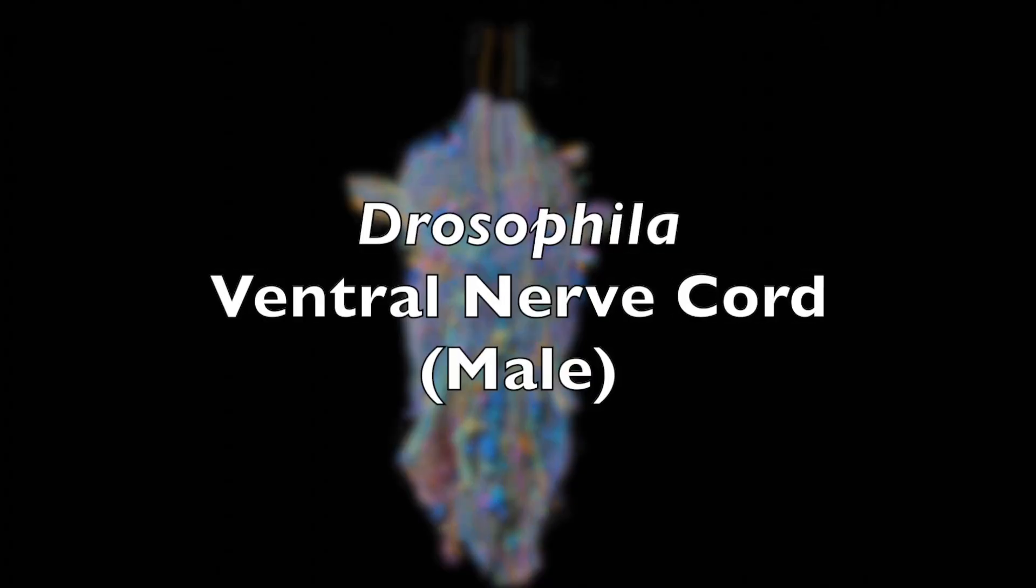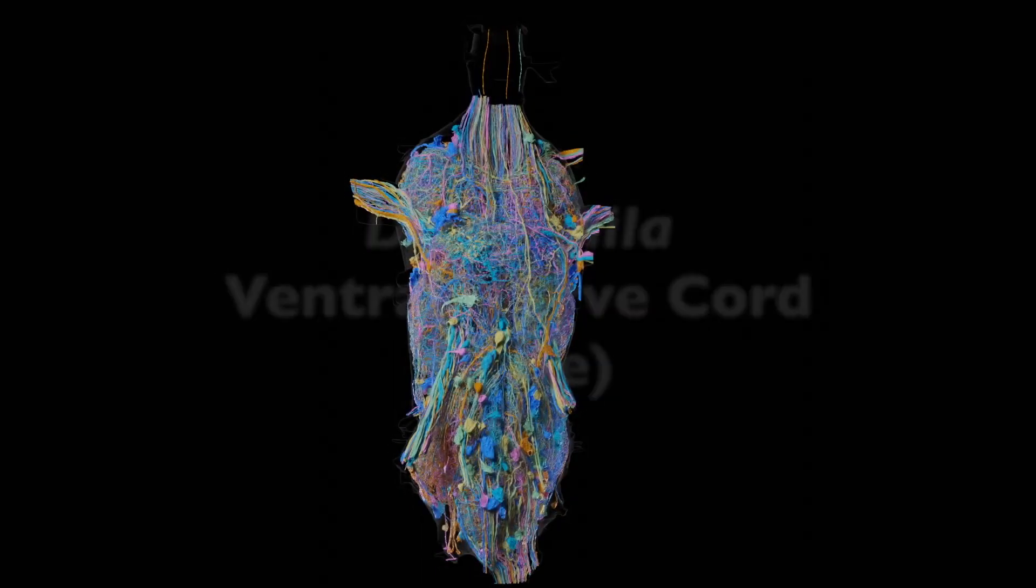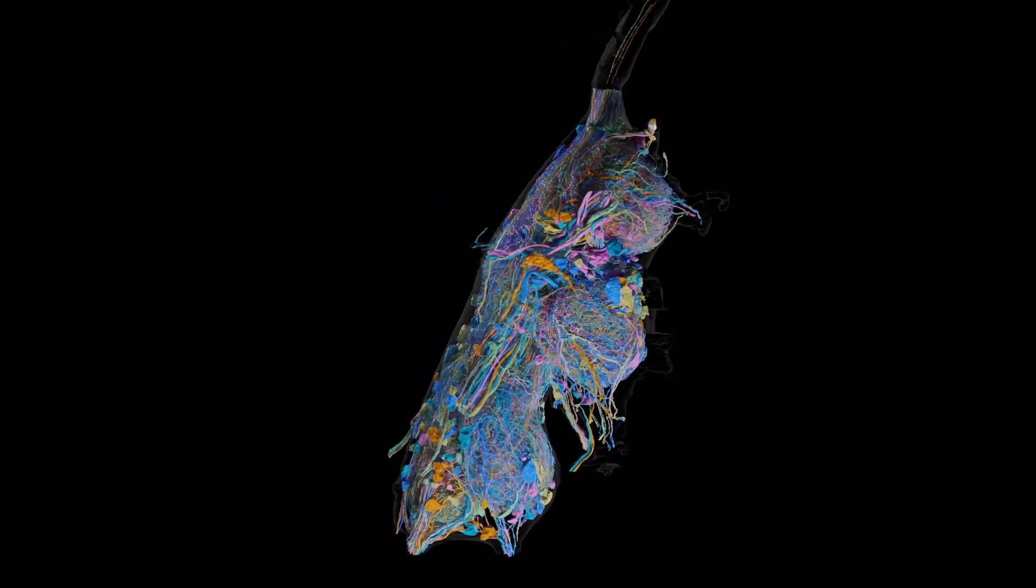The ventral nerve cord includes many different classes of neurons that work together to control behavior.